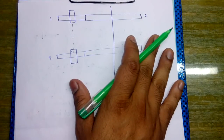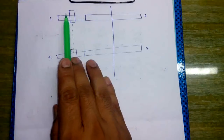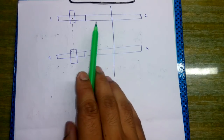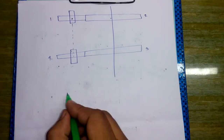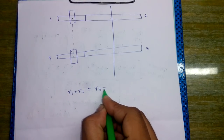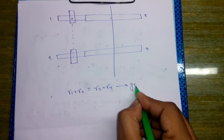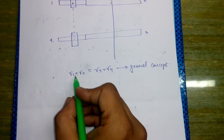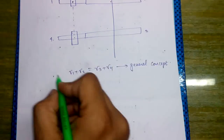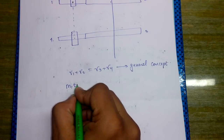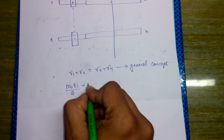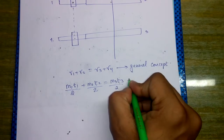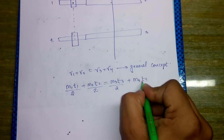This was the diagram used in the previous lecture. We can see that the summation of distances from one pair of gears equals the summation of distances of the other pair. So r1 plus r2 equals r3 plus r4. This is a very general concept used in solving numericals. We know that r equals m1*t1/2 plus m2*t2/2, which equals m3*t3/2 plus m4*t4/2.